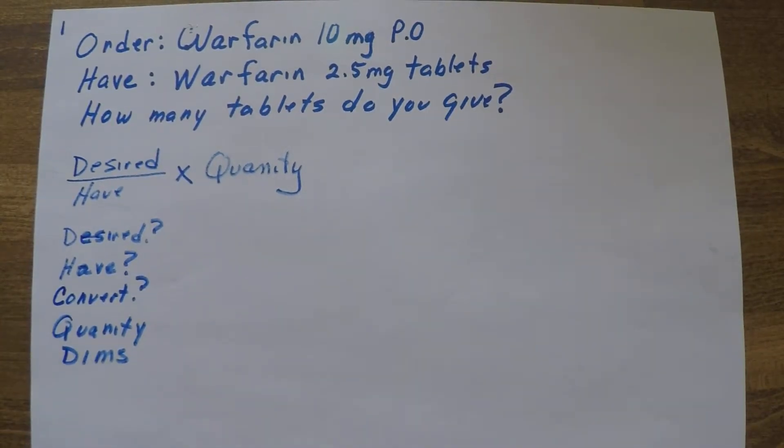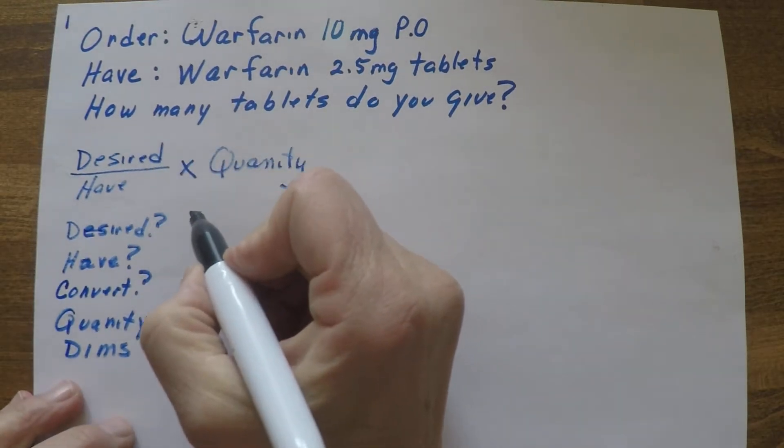The first one we have is Warfarin 10 milligrams PO. We have our packaging says Warfarin 2.5 milligram tablets, so how many tablets are we going to give? Let's use your desired over have times quantity. So our desired dose is 10 milligrams.